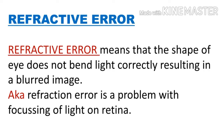Refractive error means the shape of the eye does not bend light correctly, resulting in a blurred image. In other words, the eye shape is one in which light is not properly focused on the retina. Also known as refraction error, it is a problem with focusing of light on the retina.